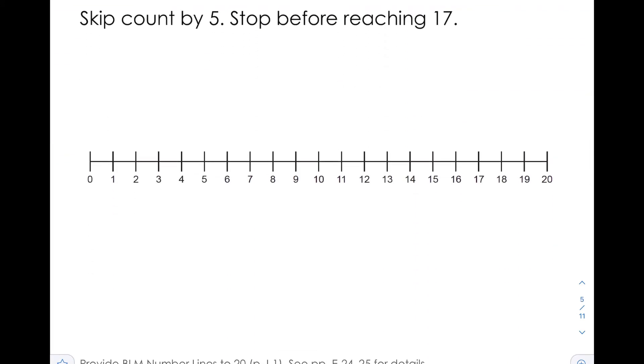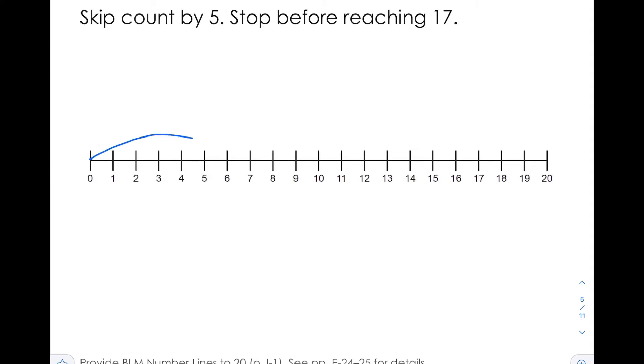We could skip count using a number line. We're going to skip count by 5, and we're going to stop before we get to 17. There's 1, 2, 3, and if we went another 5, we'd get to 20. So that is too high. We skip counted 3 times. And then to get to 17, we have to add 1, 2 more, plus 2. So our answer should be 3. This was 17 divided by 5. Our answer should be 3 with a remainder of 2.